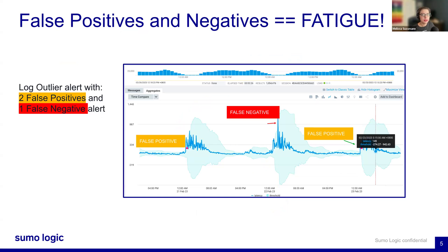This slide depicts the difference between AI-driven alerting and older methods. Looking at the older method: in the past, many customers relied on static thresholds for monitoring, set based on expected normal values — like alerting if CPU usage exceeds 80%. But they can have a lot of drawbacks.